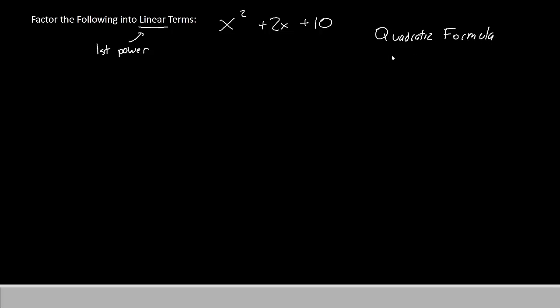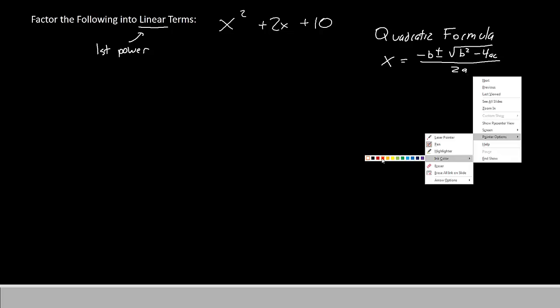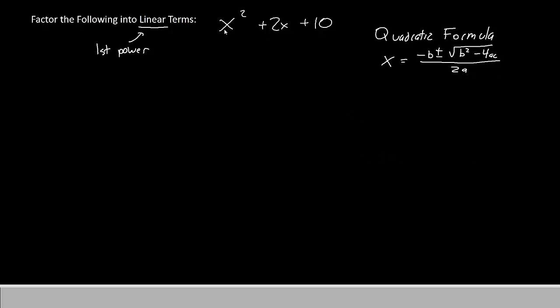And just in case you haven't seen the quadratic formula, or maybe you've seen it before but it's not very familiar to you, it goes like this. X equals negative B plus or minus root of B squared minus 4AC divided by 2A. And just as a reminder, the number in front of X squared is your A, the number in front of X is your B, and the constant term is your C. If you don't have a number in front of X squared, simply use 1.